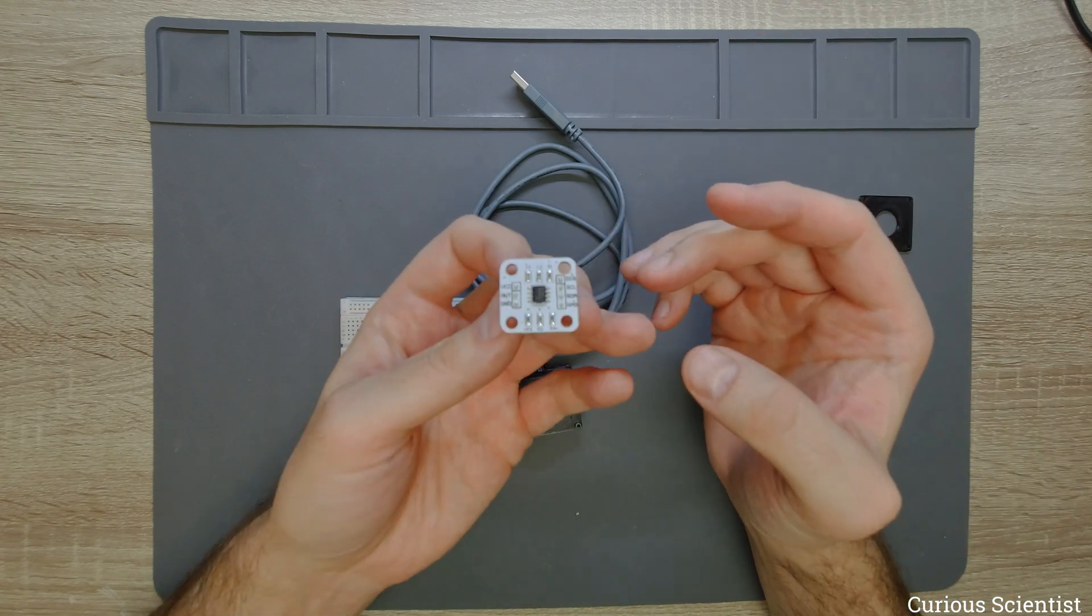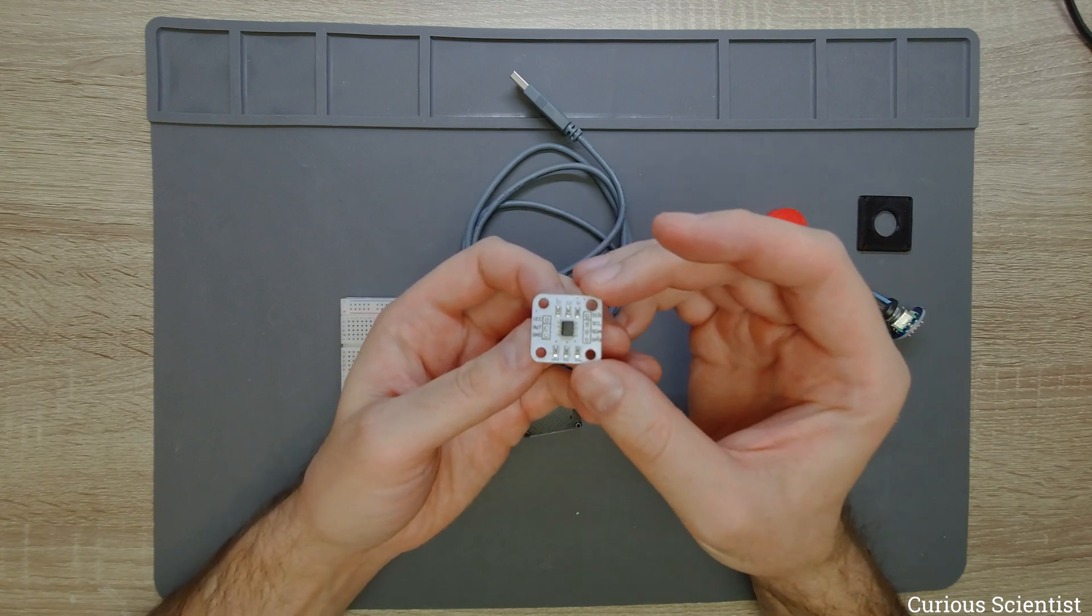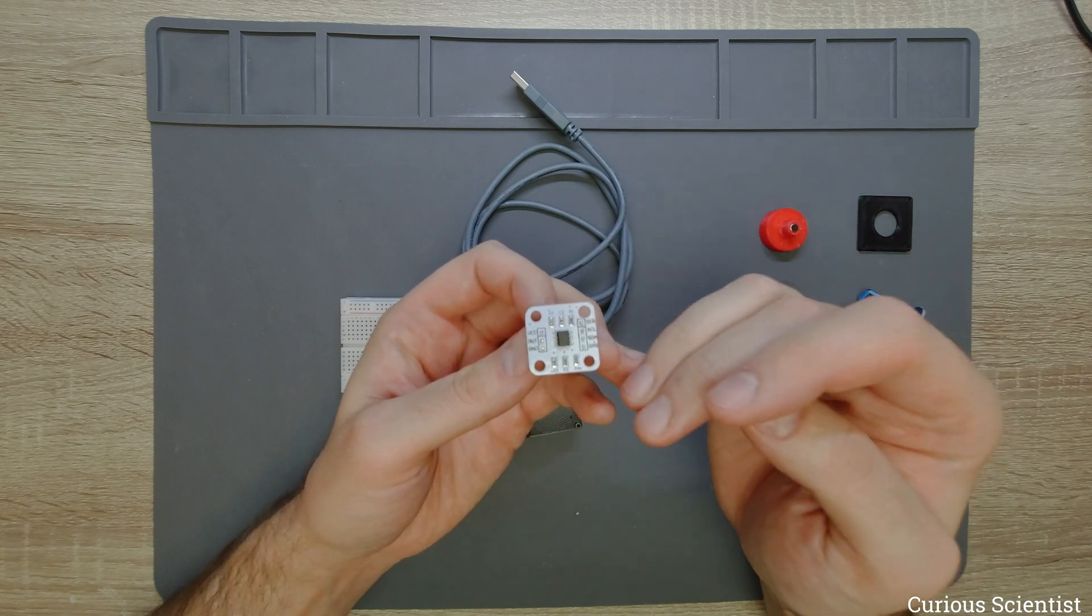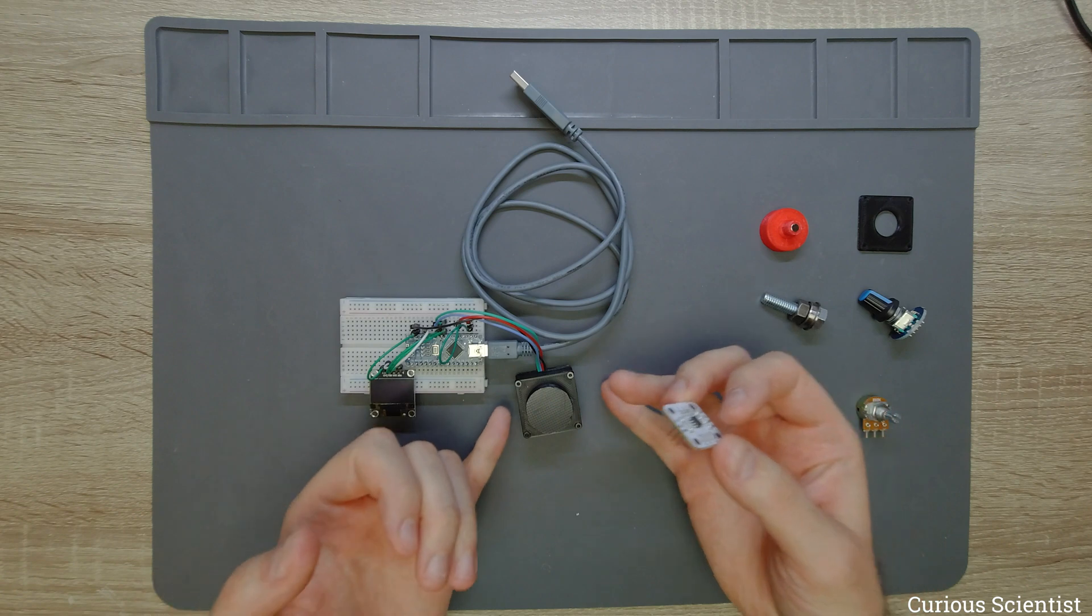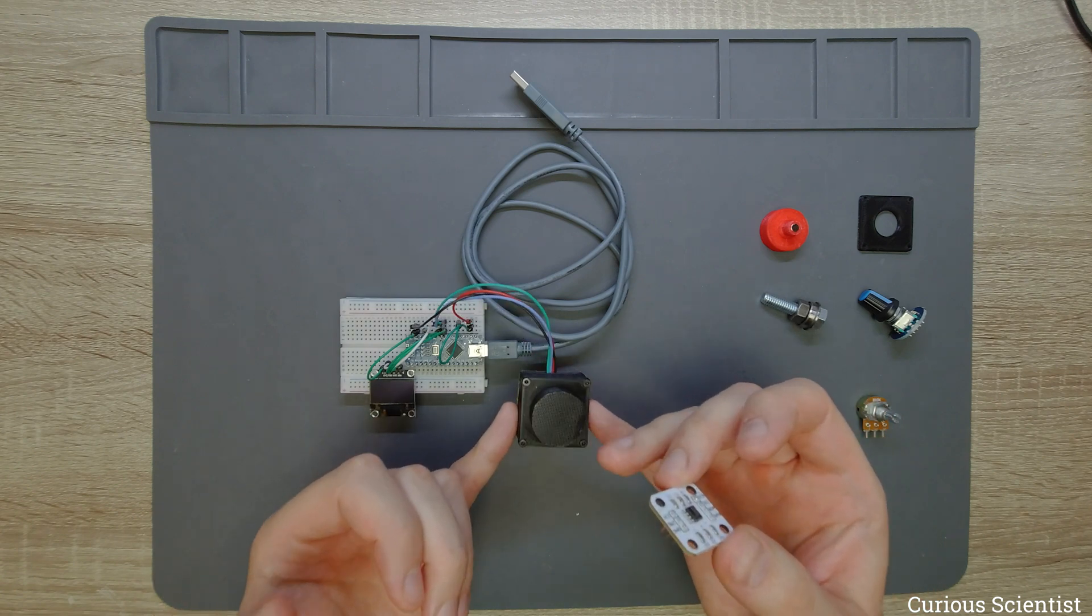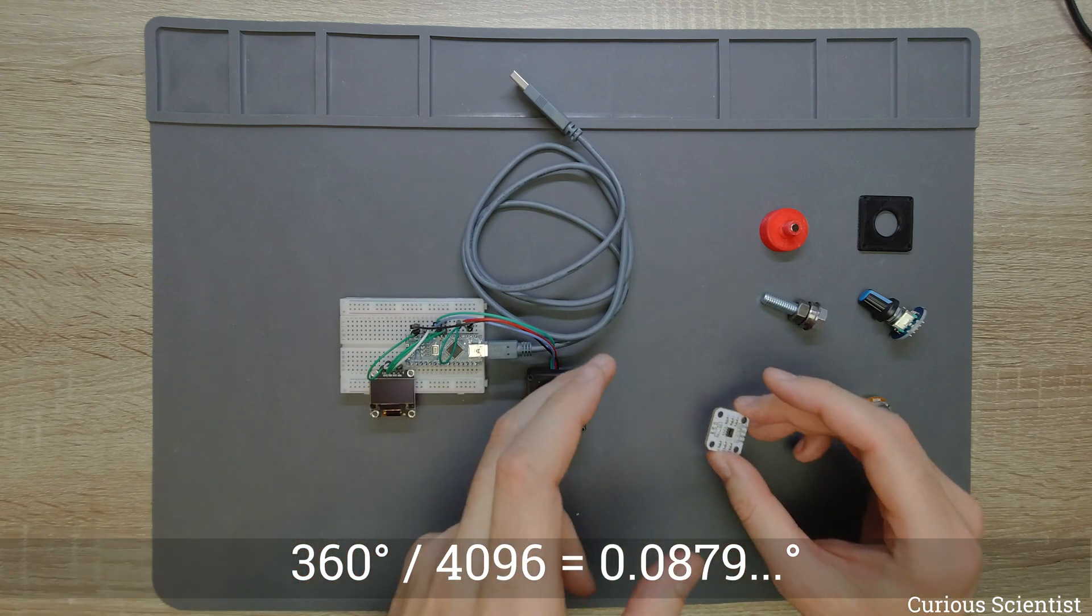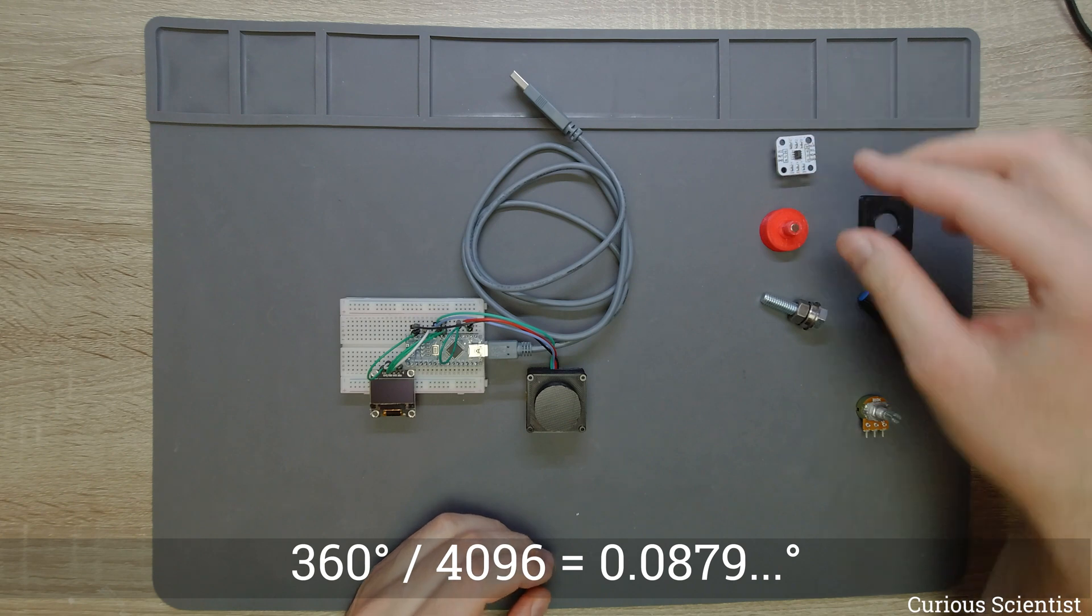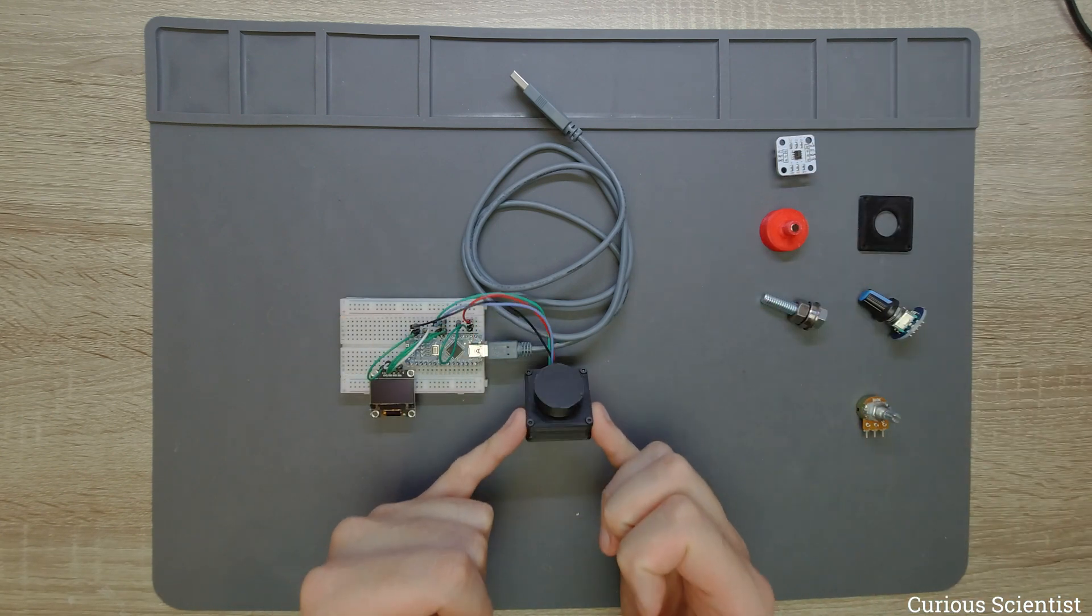And since it has a 12-bit AD converter, it can resolve this circle into 4096 equal steps. So the angular resolution of this chip, or this potentiometer-encoder, is 0.087 degrees. So you can distinguish quite small displacements with this kind of thing.